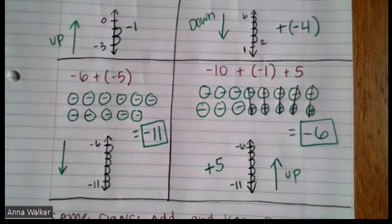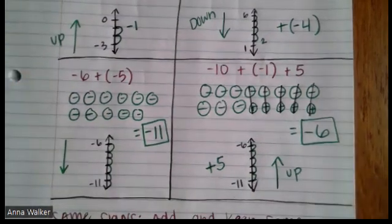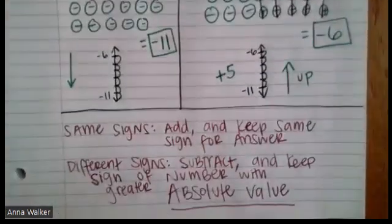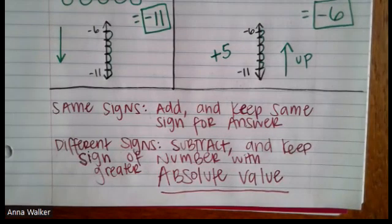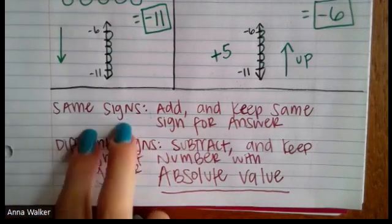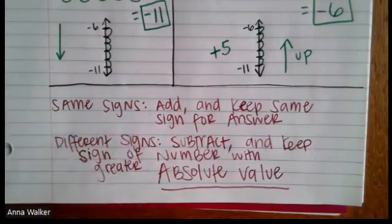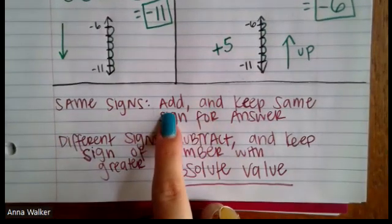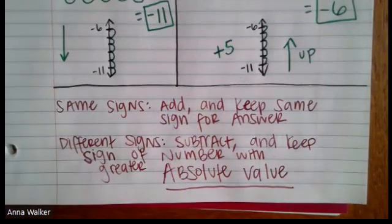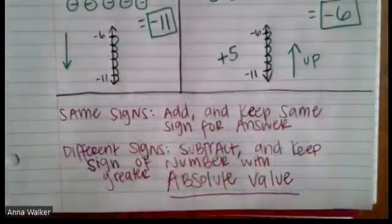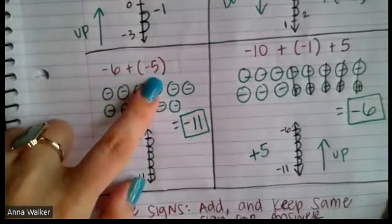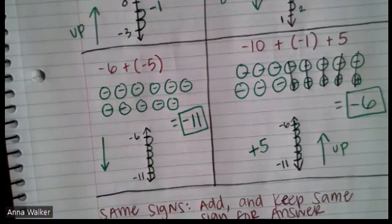There are also two rules that come about from looking at these examples. If this is your second time watching, pause and write down the rules, then we'll talk about them. So: when we add integers, if the numbers have the same signs — meaning they're both positive or both negative — you just add the numbers and keep the sign for the answer. For example, negative six plus negative five means six plus five, keeping the negative, so negative eleven.